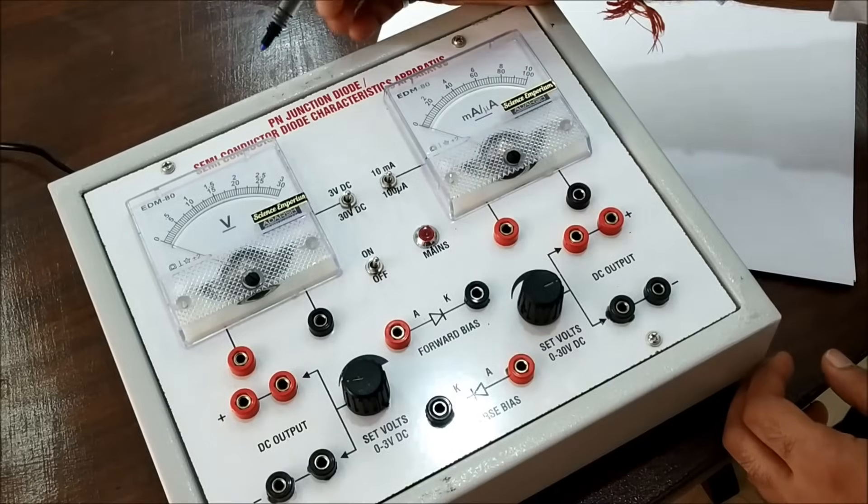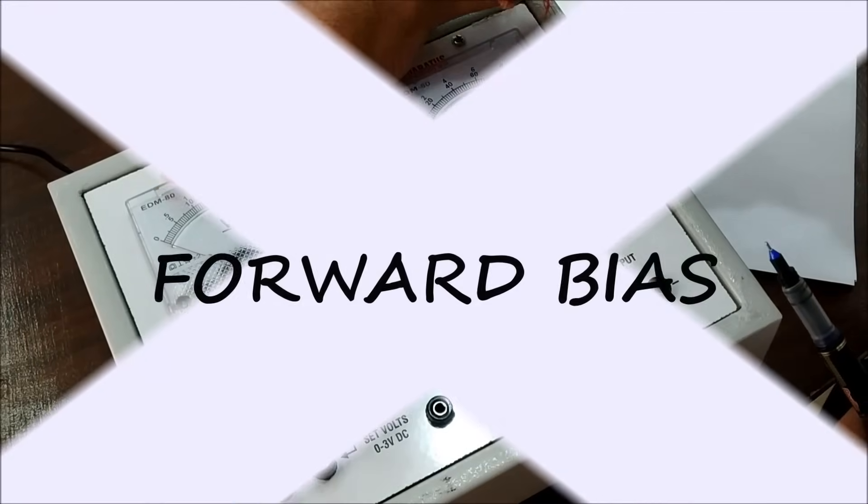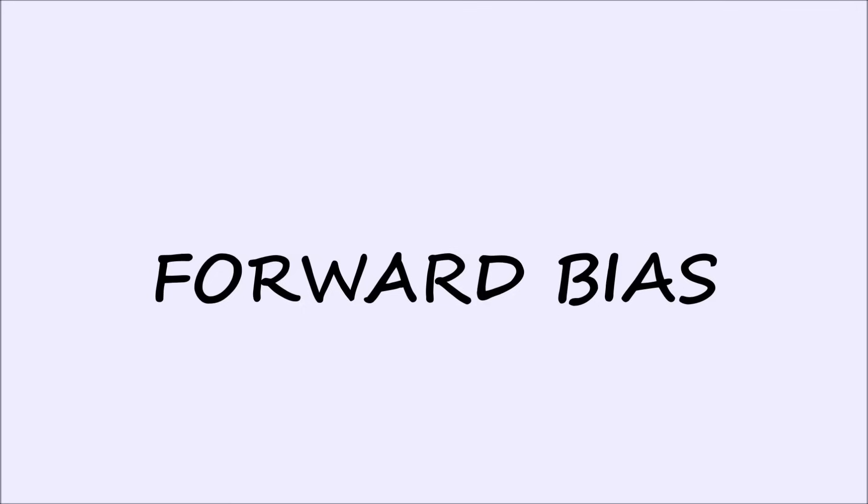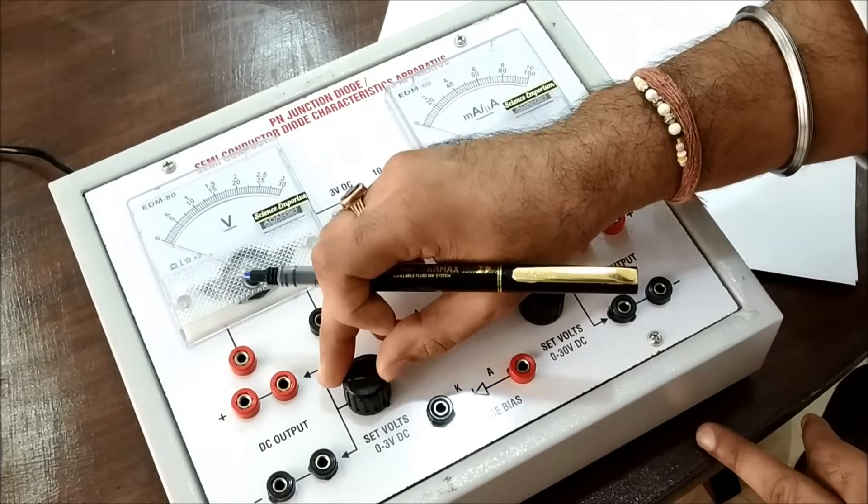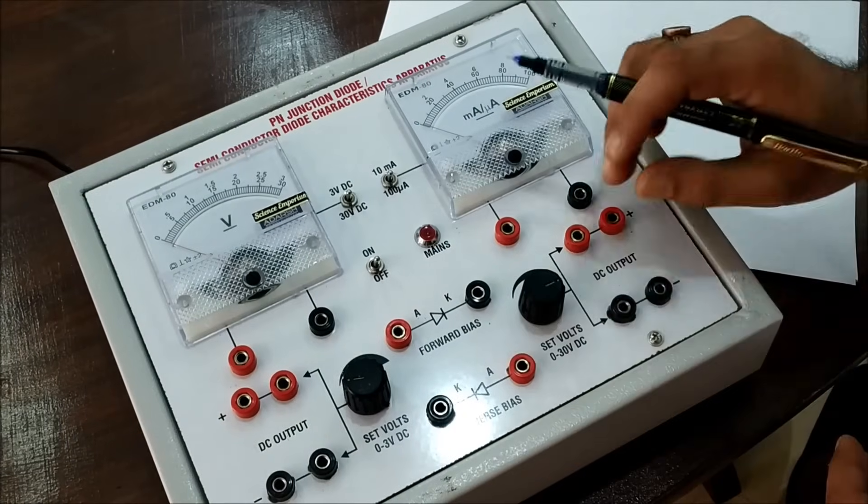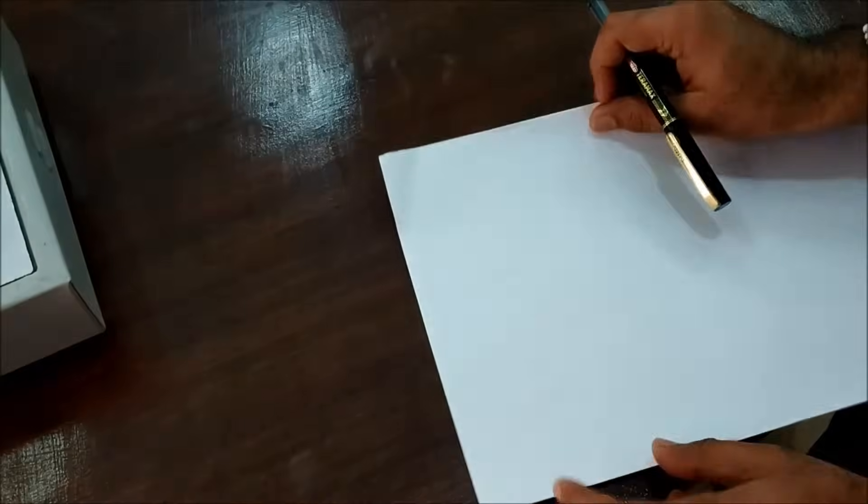We have a PN junction diode kit available, we have a voltmeter, we have an ammeter, and we have a voltage source for 3 volt and 30 volt. So first we talk about the connection diagram, what we are going to do. First we talk about the forward bias.